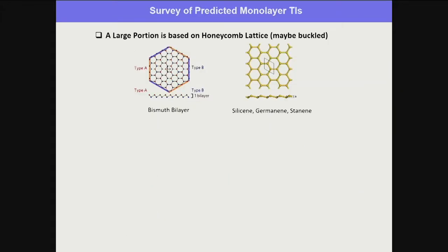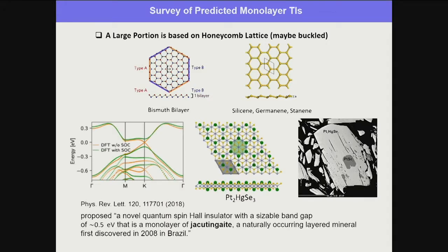This equal-sublattice property — NA = NB and EA = EB — is a very unique property of the honeycomb lattice. If you go back and check what 2D crystals have been predicted as topological insulators, you'll find a large portion are based on honeycomb lattice. For example, silicene, germanene, stanene — all some kind of honeycomb or buckled honeycomb lattice.